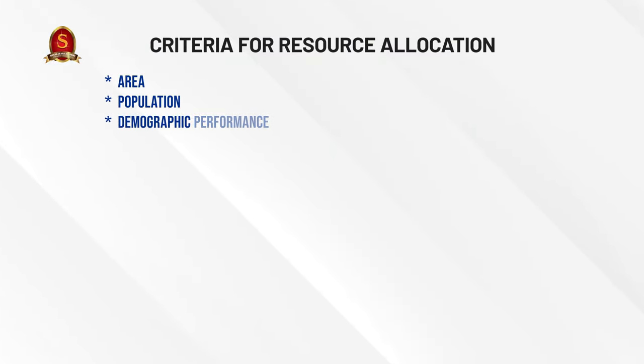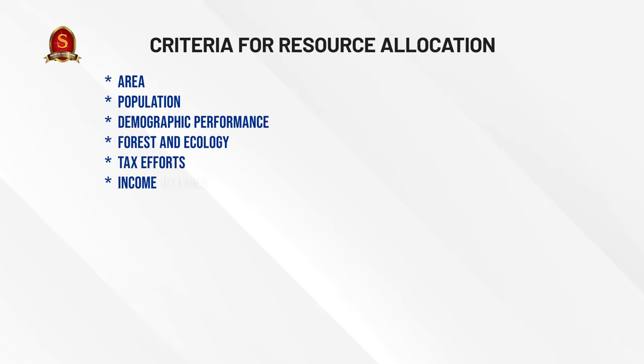The 15th Finance Commission uses six criteria to distribute resources among the states. The first criterion is area — how big is a state? Area attracts 15% of the 41% of resources. States are arranged in descending order by area, from the biggest to the smallest, and 15% of the total resources are shared according to each state's area. A bigger state gets more resources; a smaller state gets less.